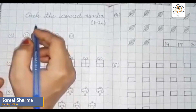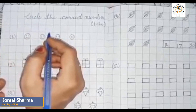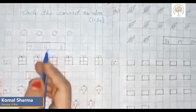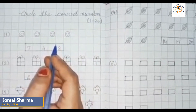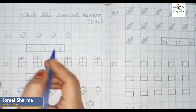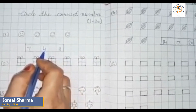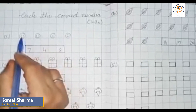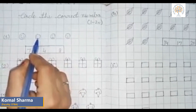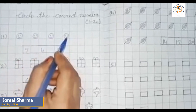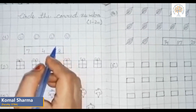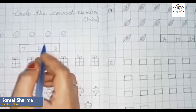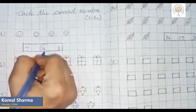Now I will teach you the next topic: circle the correct number. Now we shall count the pictures and circle the correct answer. Let us count the smileys. How many smileys are there? One, two, three, four. There are four smileys. So the right answer is four. We will circle the number four.